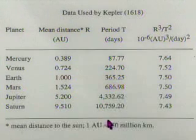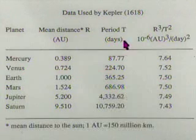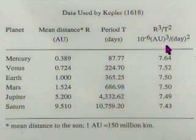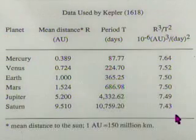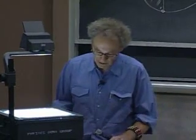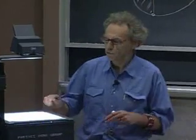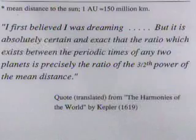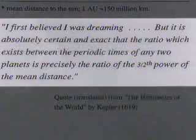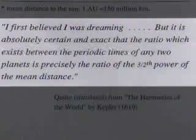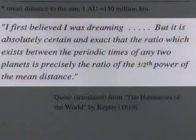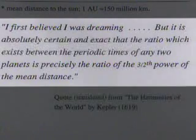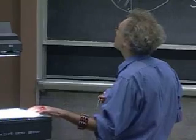When Kepler takes the mean distance to the power of three and the period squared and divides the two, he gets numbers that are amazingly constant — that is his third law. This third law leads immediately to the inverse square dependence of gravity, which he was not aware of, but Newton later put it all together. Kepler wrote jubilantly: 'I first believed I was dreaming, but it is absolutely certain and exact that the ratio which exists between the periodic times of any two planets is precisely the ratio of the three-half power of the mean distance.' He wrote that in 1619.